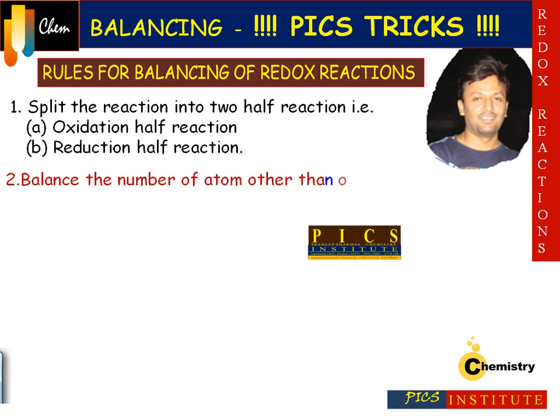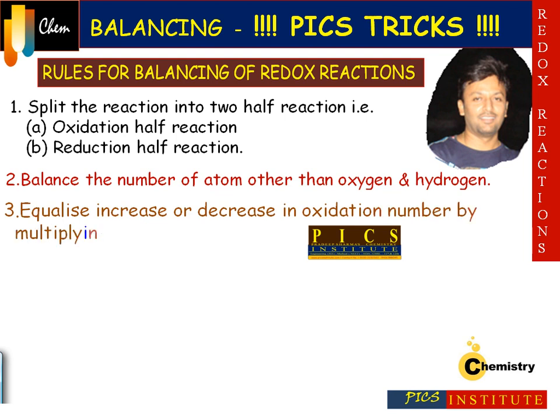Another will be the reduction half. The second step is to balance the number of atoms other than oxygen and hydrogen. Third step: check the increase or decrease in oxidation number in both equations, then equalize the increase or decrease in oxidation number by multiplying with a suitable number. Students, always remember: increase in oxidation number should be equal to decrease in oxidation number.